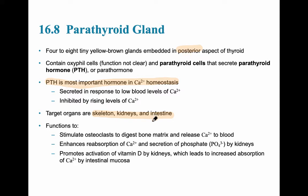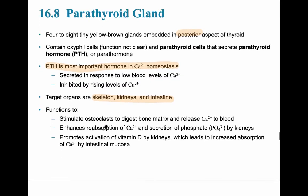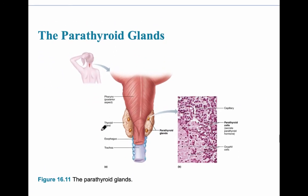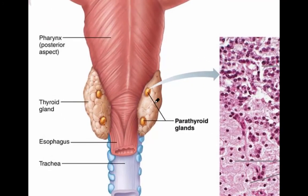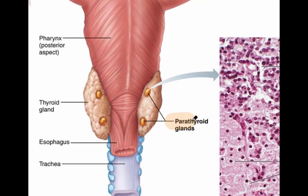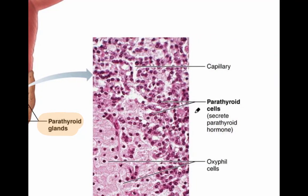If someone has hyperparathyroidism — meaning PTH is too high — it can have a destructive effect on the skeletal system because too much calcium is being pulled from the skeleton into the blood, making the bones weak. The parathyroid glands can be seen on the posterior side of the thyroid gland, and histologically they secrete parathyroid hormone.